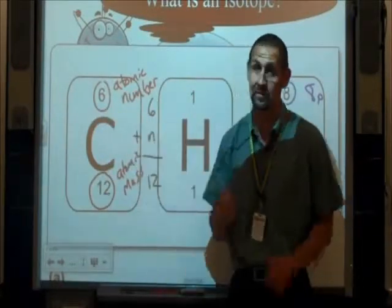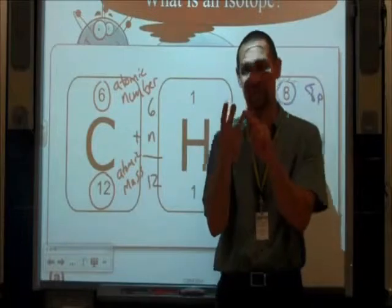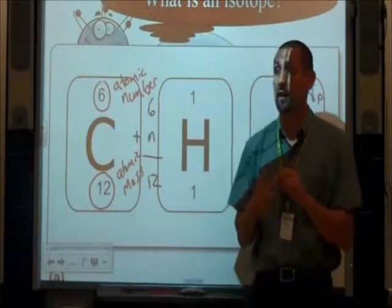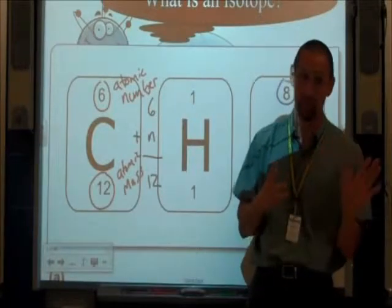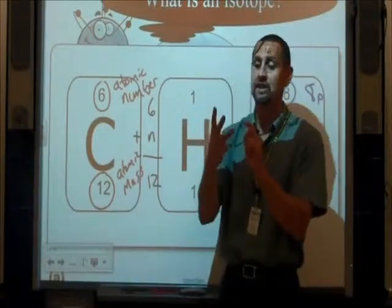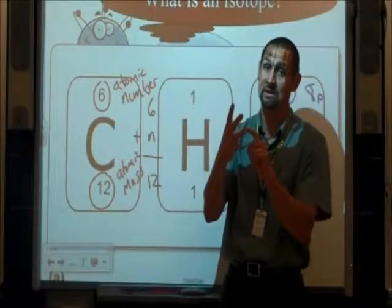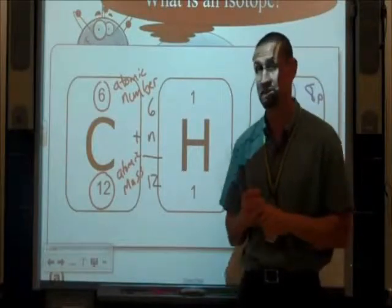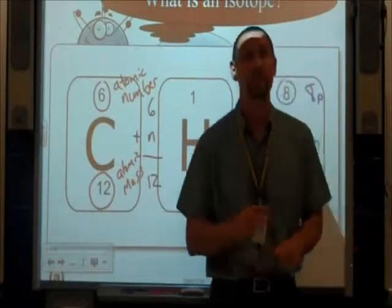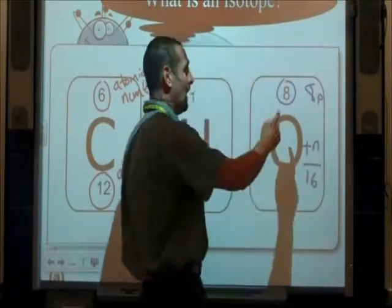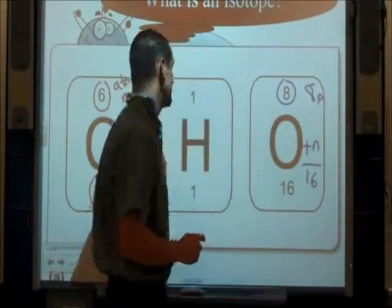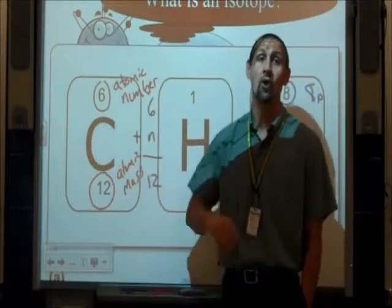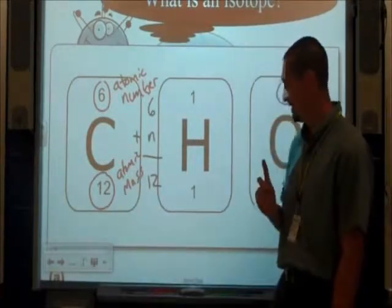So I've got protons, neutrons, and electrons in my atom. If I change the number of electrons, then I've got an ion. It's either going to be positive or negative charge. If I change the number of neutrons, then I have an isotope. Same number of protons, different number of neutrons. Now you might be thinking, okay, eight protons, eight neutrons, six protons, six neutrons, are all the elements the same? And the answer is no.